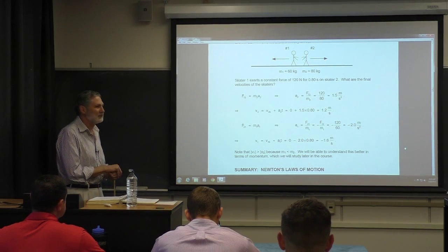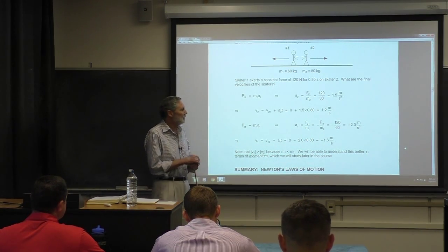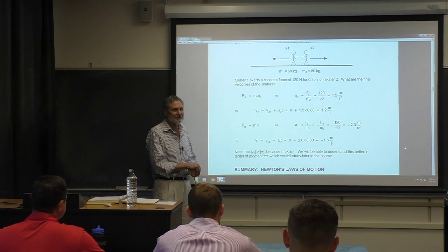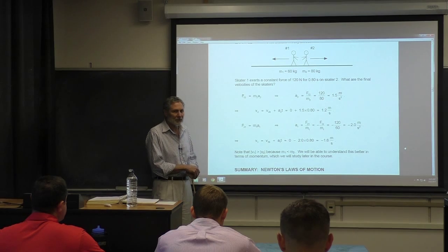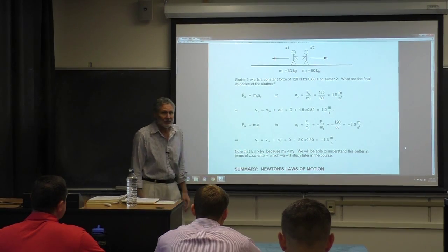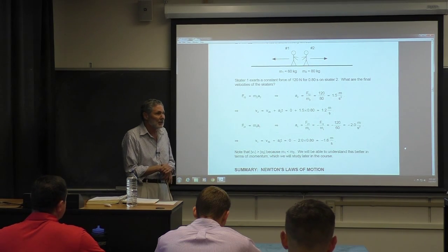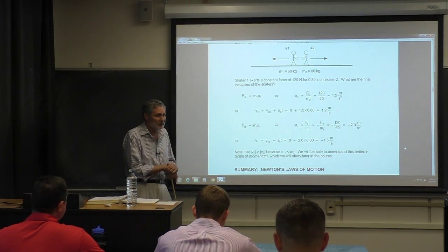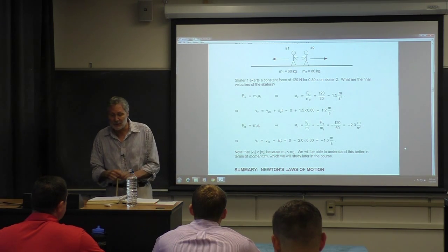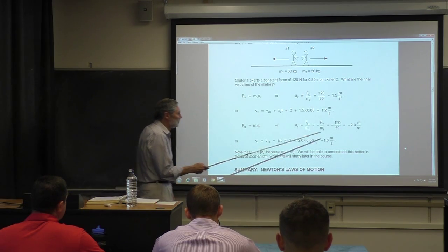So let's look at the final velocities. Are they the same? No. This person is moving faster, and that makes complete sense — less mass. The less mass this person has, the greater velocity that person is going to have, because the acceleration is inversely proportional to mass by Newton's Second Law. So the lighter the person, the greater the velocity.